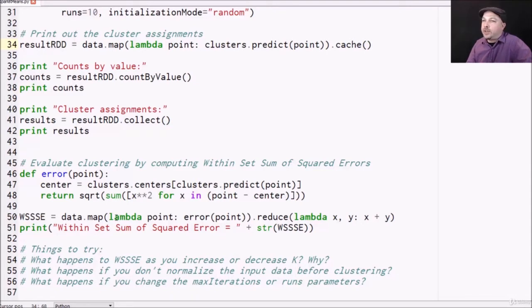Now, to do that, we define this error function that computes the squared error for each point. It just takes the distance from the point to the centroid center of each cluster and sums it up.